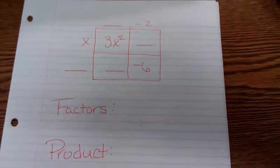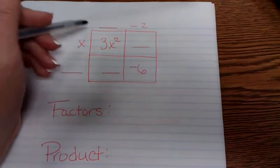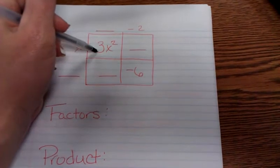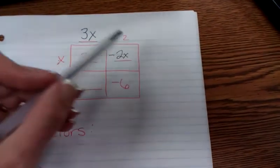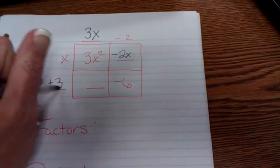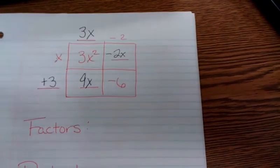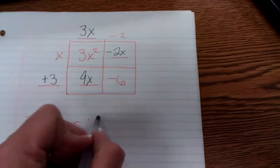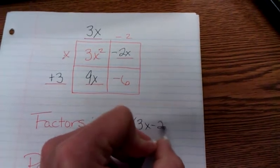Here's the next one to try. Pause the video and come back and see how you do. Here, x times what gives you 3x squared? This should be 3x. x times negative 2 is negative 2x. Negative 2 times what gives you negative 6? Well, that's a positive 3. 3x times 3 is 9x. Remember, my factors are on the outside. So, I have x plus 3 times 3x minus 2.